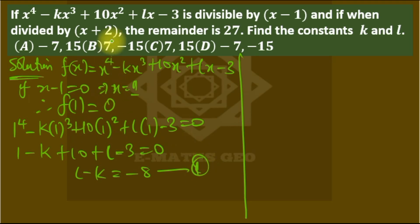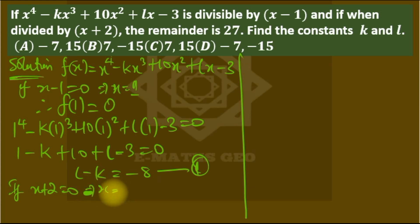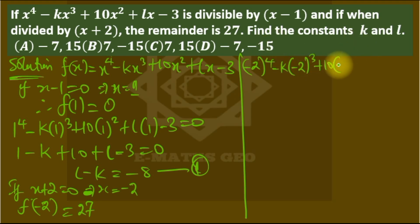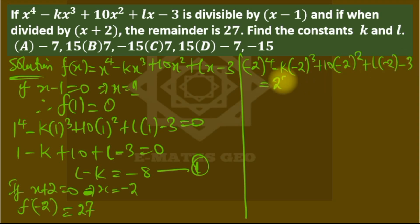They also said the remainder is 27 when divided by x + 2. If x + 2 = 0, then x = -2. So f(-2) must give us 27 — that's the remainder theorem, whereas the factor theorem always gives remainder 0. So we substitute x = -2: (-2)⁴ minus k times (-2)³ plus 10 times (-2)² plus l times (-2) minus 3 must equal 27.